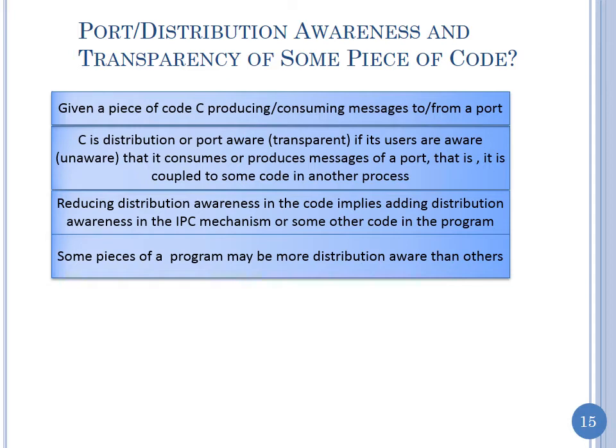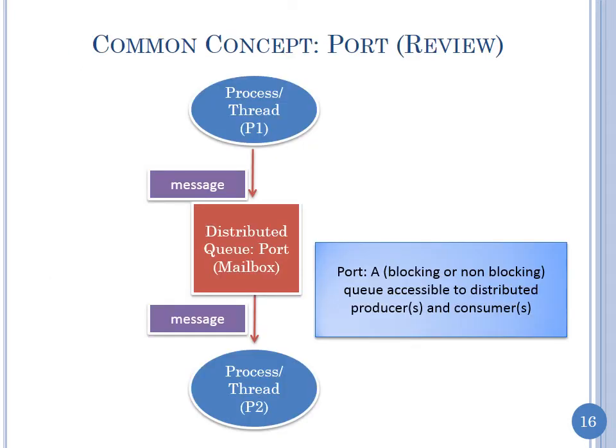Last time we saw a general model for IPC communication involving a distributed object — a distributed queue we called a port. Sending a message meant putting a message in the queue; receiving meant removing one. This is really a producer-consumer problem. Different IPC mechanisms differ in various aspects, including whether they block you or not — a queue could be a bounded buffer with or without blocking.